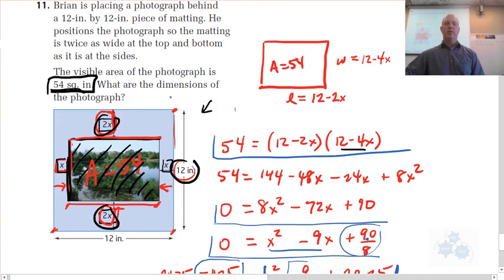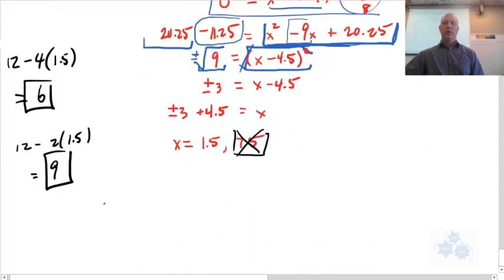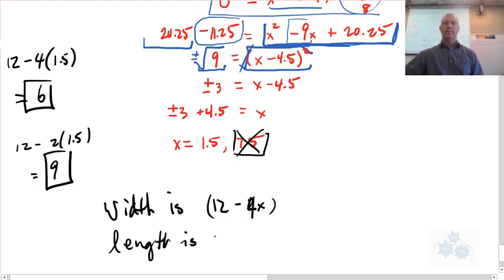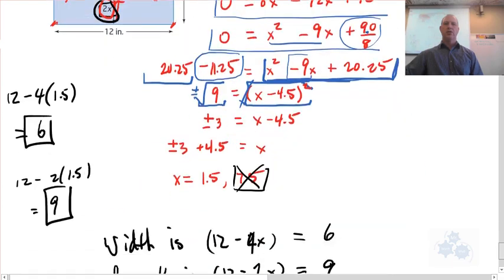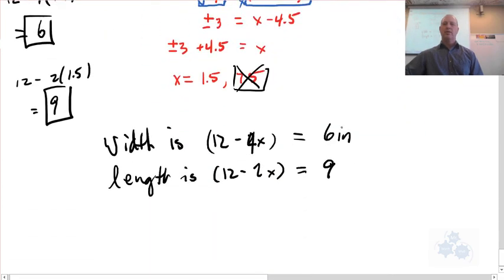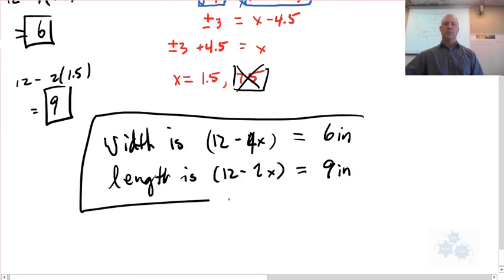So the question says, what are the dimensions of the photograph? And again, here are your dimensions, so we'll plug in our value for x that we found. And so the width is 12 minus 4x, and the length is 12 minus the 2x. And that equals up here, equals the 6, and this is the 9, so we'll put some units on that to finish that question off. What is it? Inches. So 6 inches and 9 inches.